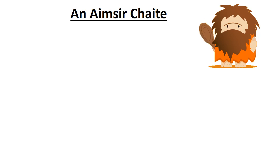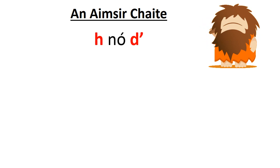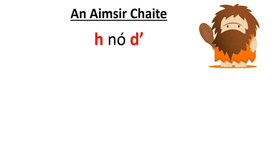So, ar dtús, an aimsir chaite. We put a 'h' in to show the aimsir chaite — or a d'apostrophe if we have a vowel.